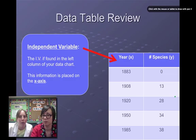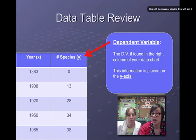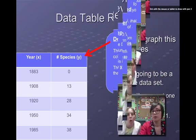We can also find our IV and our DV in our data table. In our data table, the IV is usually found in the left-hand column. In this case, the IV is going to be the number of years. And the dependent is going to be the number of species. This is just reinforcing what we just said. The dependent variable usually is found on the right-hand side of the data table.